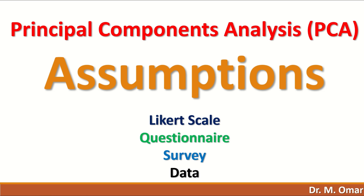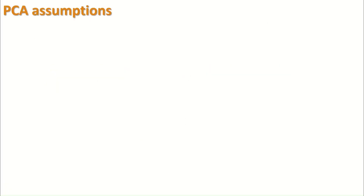In this video, we discuss the assumptions that need to be fulfilled before performing Principal Component Analysis, abbreviated as PCA, for data extracted from a questionnaire or survey based on a Likert scale. PCA is a multivariate statistical method performed to reduce the number of items into a smaller number called principal components. Before performing this method, certain assumptions have to be fulfilled.